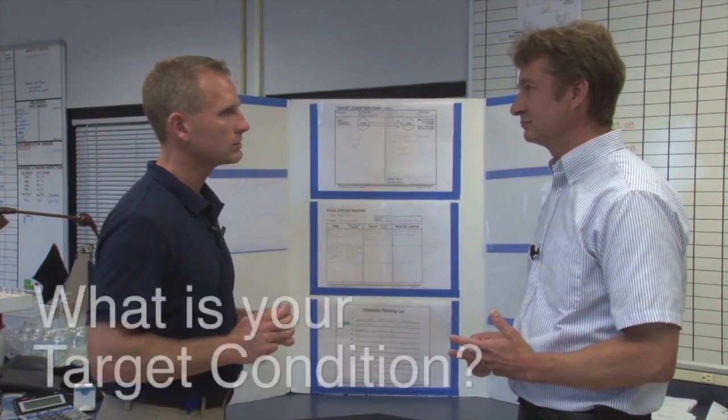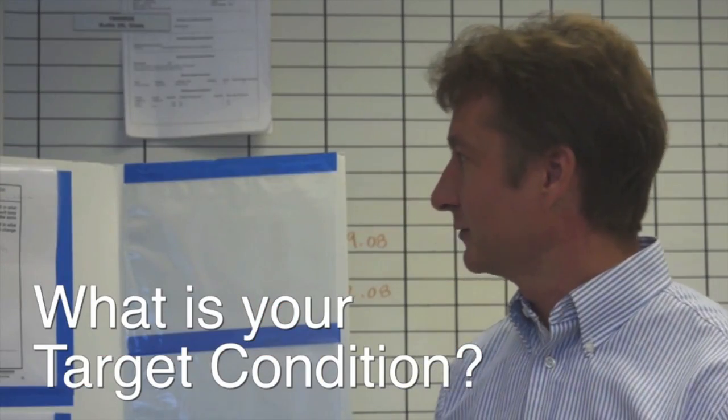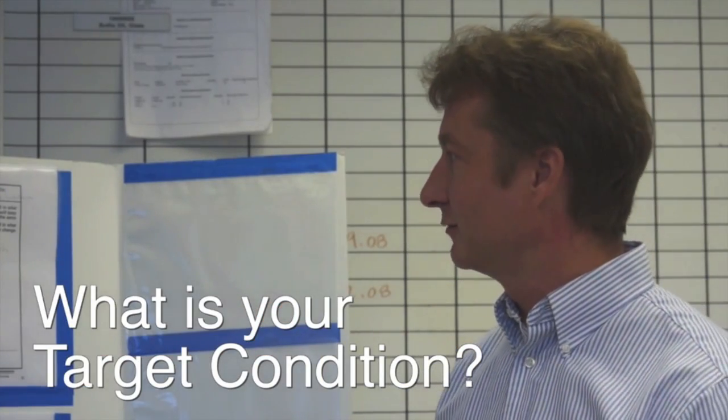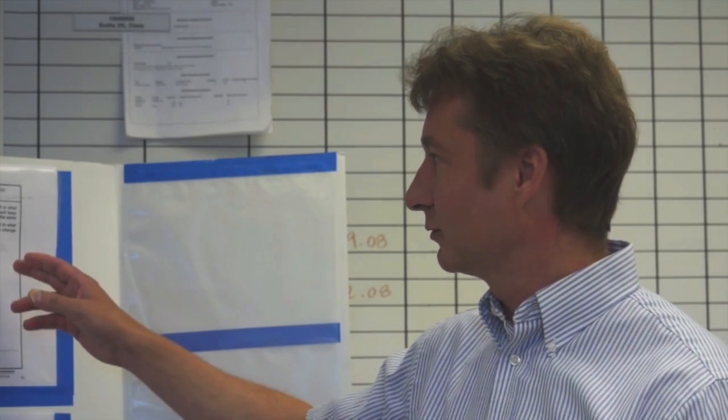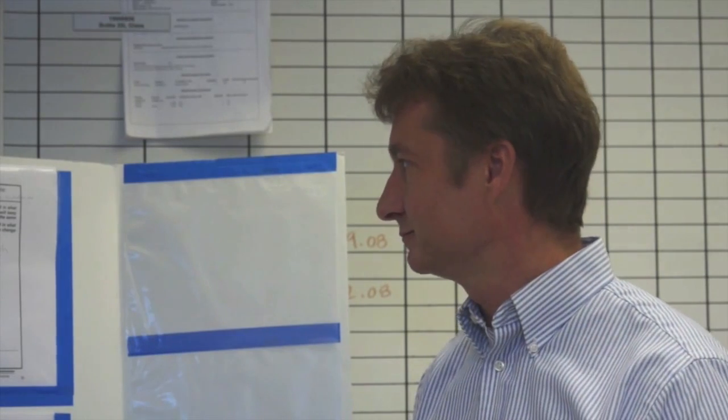So now let's take it down a level and talk a little bit more about how that relates to you and your team. What is the target condition that you're striving to achieve? Well, in Supplies Inspection, our piece of the Value Stream, we need to establish a workflow system in this area that's both planned and leveled. Okay.